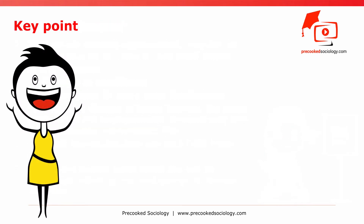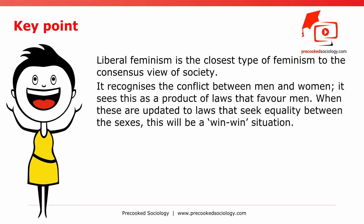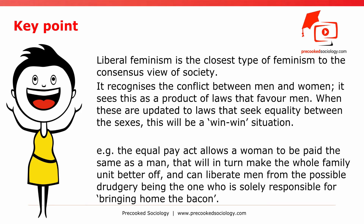Key point: though it is critical of functionalism, liberal feminism is the closest type of feminism to the consensus view of society. This is because, though it recognizes the conflict between men and women, it sees this as a product of laws that favor men. When these are updated to laws that seek equality between the sexes, this will be a win-win situation. For example, a law like the Equal Pay Act allows a woman to be paid the same as a man, which will in turn make the whole family unit better off, and can liberate men from possibly being solely responsible for bringing home the bacon.